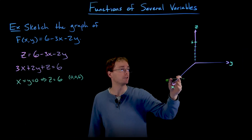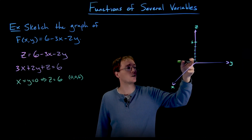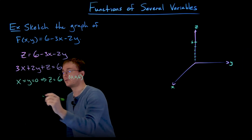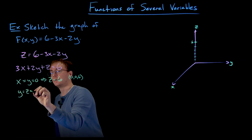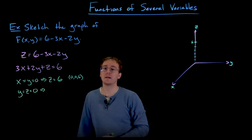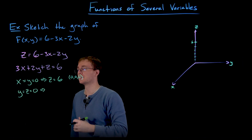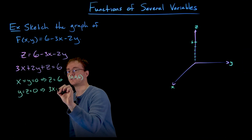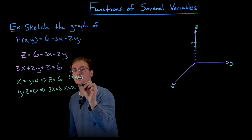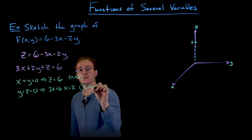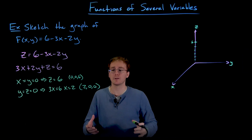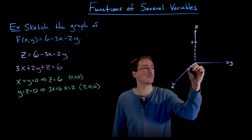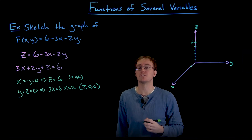Now we need our other intercepts. For the x-intercept, we need to be on the x-axis, so y and z are both equal to zero. Setting y and z to zero, our equation reduces to 3x equals 6, which tells us x equals 2. So another point on the graph of our plane is (2, 0, 0). We take two steps along the x-axis and plot that point.